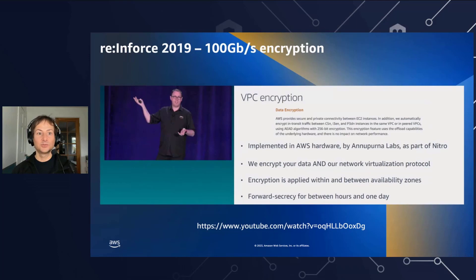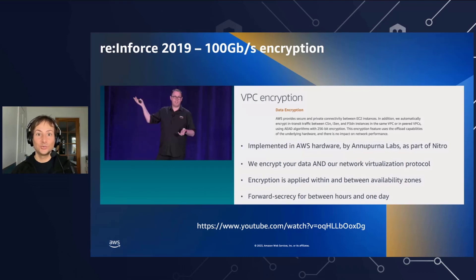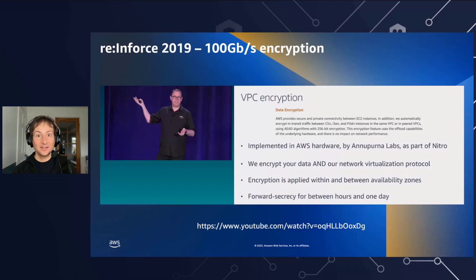Another feature we've been able to implement thanks to dedicated hardware is full line-speed encryption between some of our EC2 instances. We disclosed that at re:Inforce in 2019. The reason we've been able to do that is because we use dedicated hardware as part of our virtualization stack. Once you have dedicated cards handling the network, adding a specific component that does encryption — without any influence on performance or visibility from your virtual machine — is something we can do with that dedicated virtualization hardware. And those pieces of hardware are custom-designed by AWS.